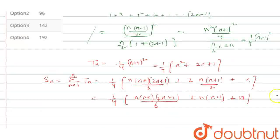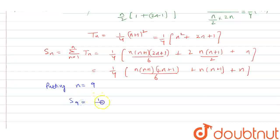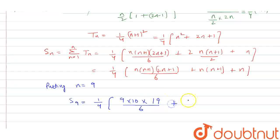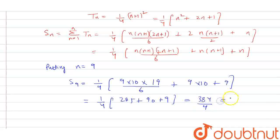Now we find the sum of the first 9 terms, so we put n = 9. Substituting: S₉ = (1/4) × [9×10×19/6 + 9×10 + 9] = (1/4) × [285 + 90 + 9] = (1/4) × 384 = 96.